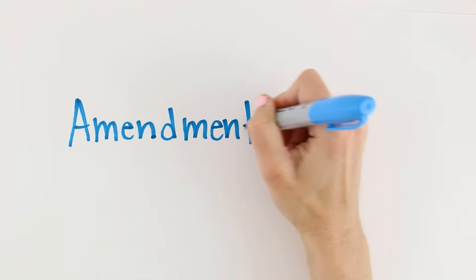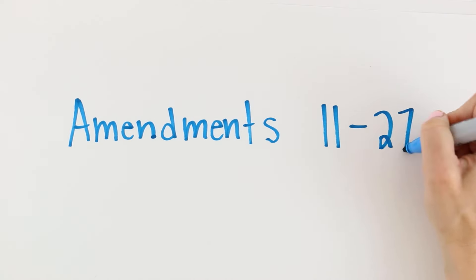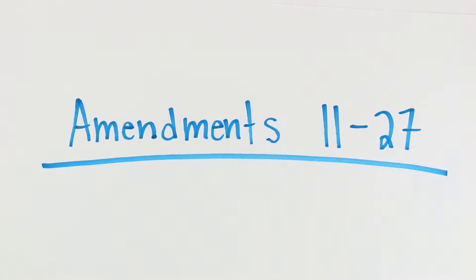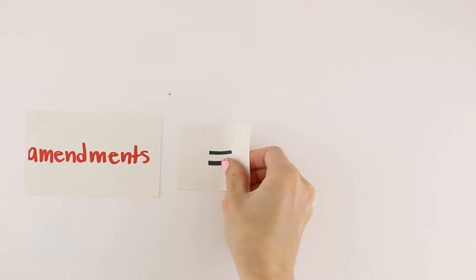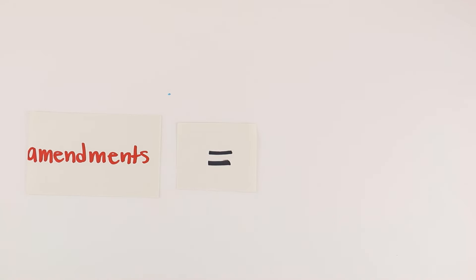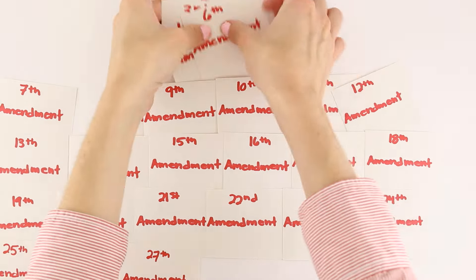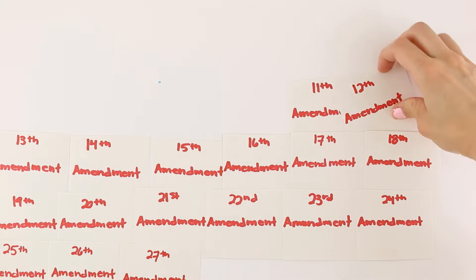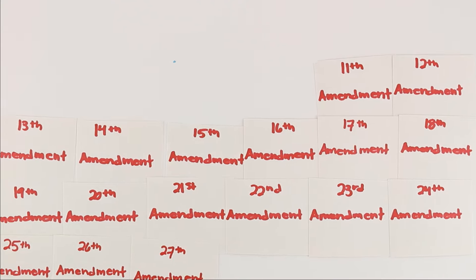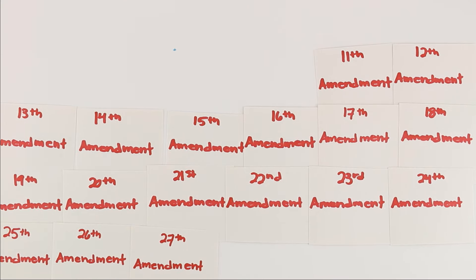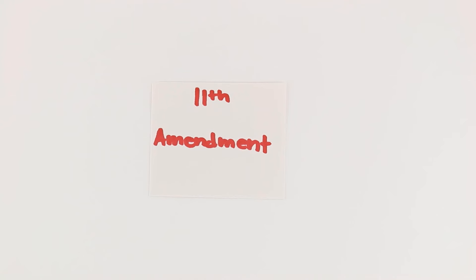Today, we will learn about Amendments 11 through 27. Amendments are changes to the Constitution, so they come at the very end after the Preamble and the Articles. We have 27 Amendments total, but today we will learn about Numbers 11 through 27. Let's jump right in with the 11th Amendment.